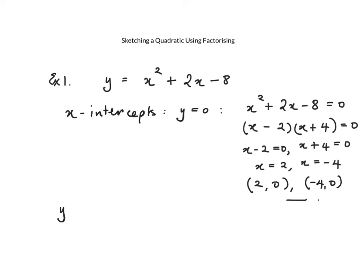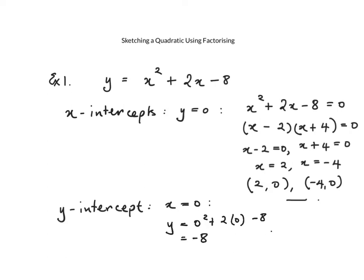Now the y-intercept, where the graph cuts the y-axis, is always found when x equals 0. We've done this sort of thing before at the start of third year when we were working with a straight line. So setting x equals 0 and substituting into the equation: y equals 0 squared plus 2 times 0 minus 8. Zero multiplied by anything is 0, so we just get minus 8. The y-intercept is (0, −8).